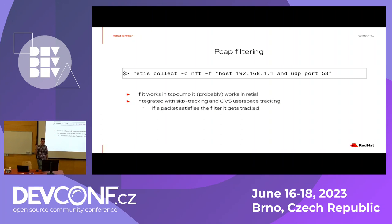One of my favorite features: we have PCAP filtering with exactly the same syntax as tcpdump. If it works in tcpdump it will most likely work in retis — for most common use cases it will work. Retis translates it to legacy BPF, then converts that to eBPF, and inserts it into the kernel for filtering.